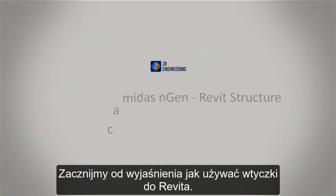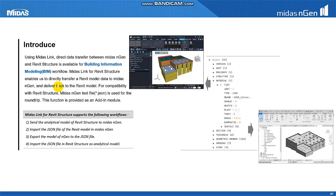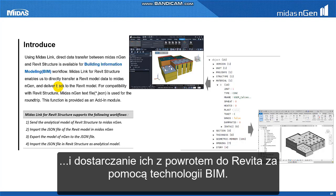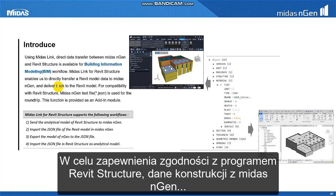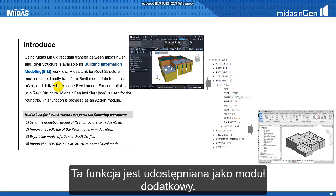Let's start with Engine Link for Revit Structure. Engine Link for Revit Structure enables us to transfer Revit data to Midas Engine and deliver it back to Revit for building information modeling. For compatibility with Revit Structure, Midas Engine data is converted into a text file (.json) for the round-trip. This function is provided as an add-in module.